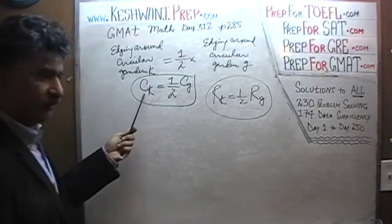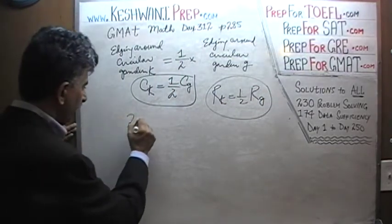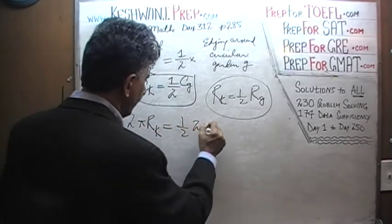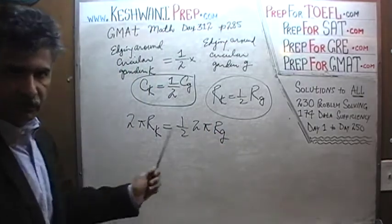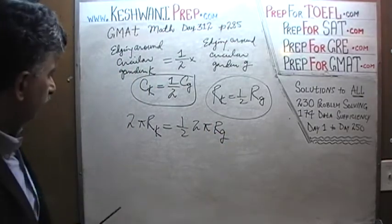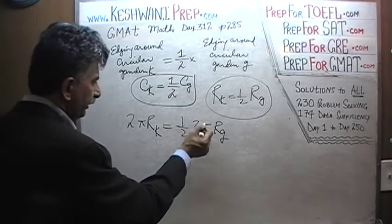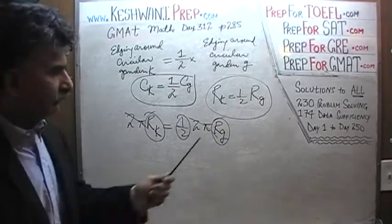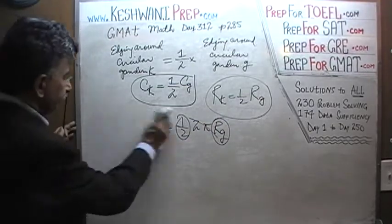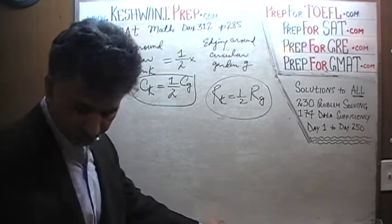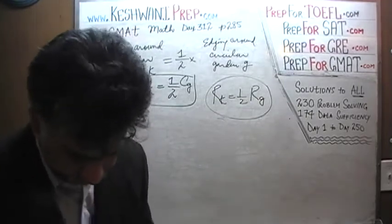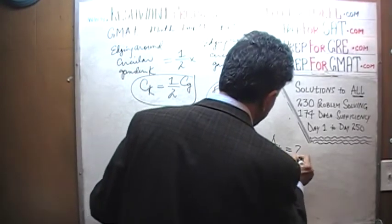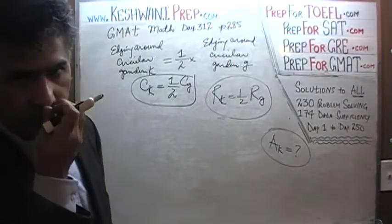For simple facts: circumference equals 2πr. For circle K: 2π·r_K = (1/2)·2π·r_G. Divide both sides by 2π and the radius of circle K equals half of the radius of circle G. The question is asking for the area of K. Let's find out.